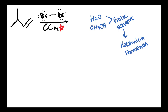If instead we were using a protic solvent, such as water or methanol, we would be looking at an entirely different reaction — we would instead be looking at halohydrin formation. Another common example of an aprotic solvent that you'll see with halogenation is CH2Cl2. I would really make sure that you know these two — CCl4 and CH2Cl2 — as your examples of aprotic solvents for halogenation.